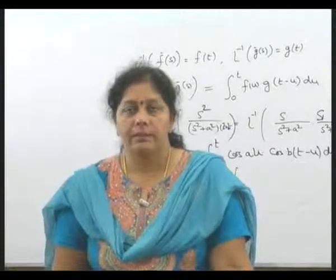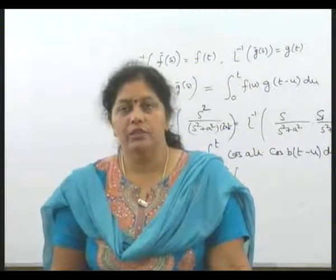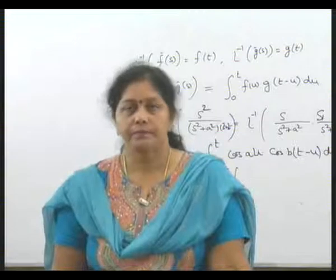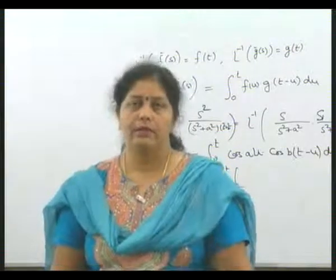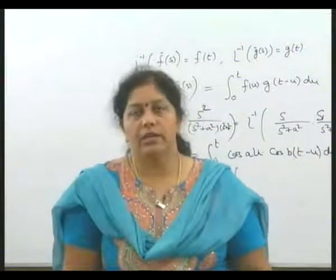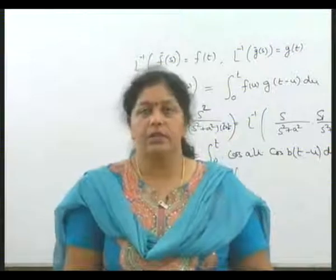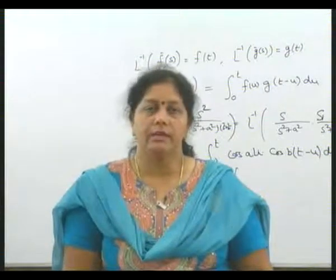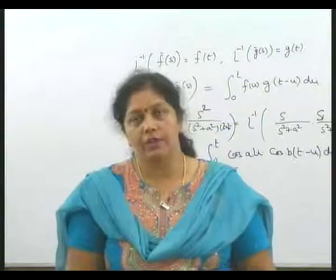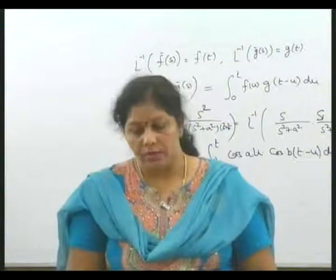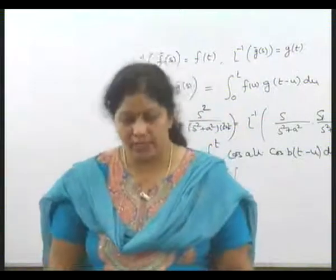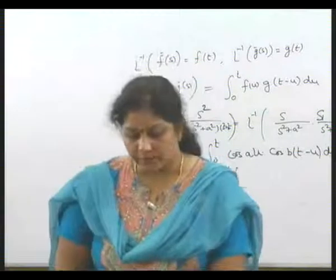L inverse of 1 upon s to power n is t to power n minus 1 divided by gamma n. This is because L inverse of t to power n is gamma n plus 1 divided by s to power n plus 1, and applying that same formula here we get these values.